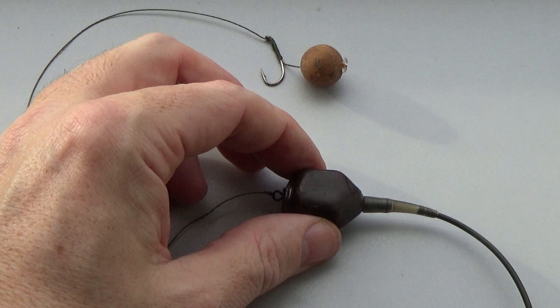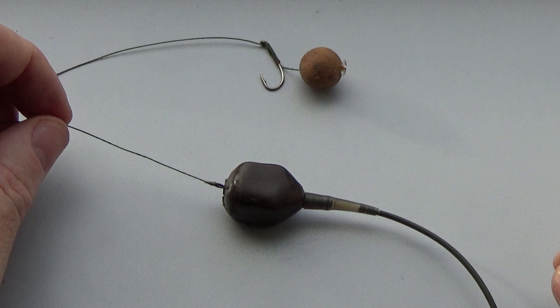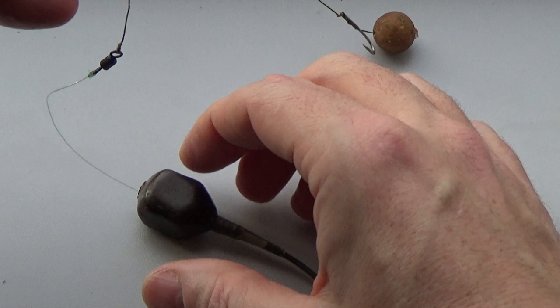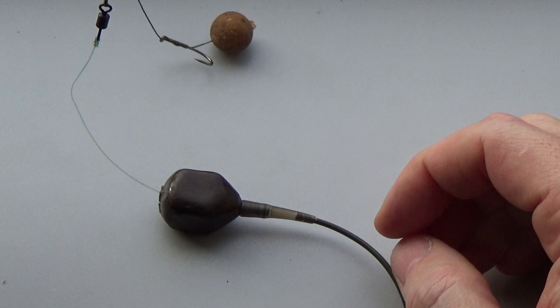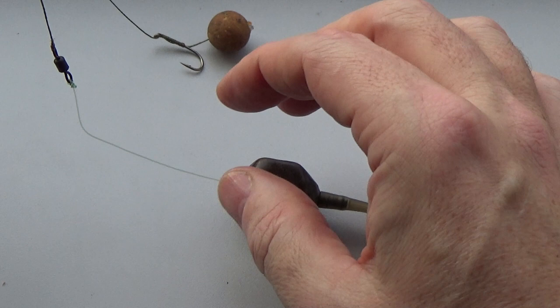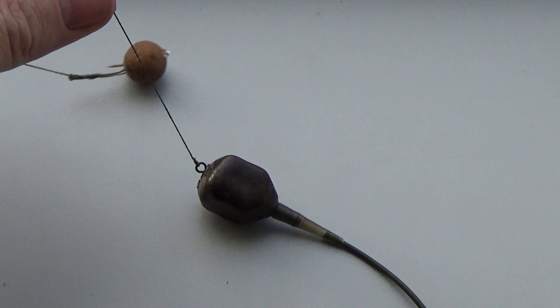And what that will do is it will make it easier for that swivel to pop out of that housing in the event of a run. As a general rule of thumb for an inline lead, for it to be safe you need to pick the rig up and it should fall away under the weight of the lead. It should fall off. If it's jammed on and that lead doesn't drop, then chances are it's too tight and there's a chance that if your main line breaks that won't pull off and the fish will be left dragging the lead. Believe me, people can really ram them on tight and they don't need to be. So as a general rule of thumb, pick the rig up—one shake and it should fall off.